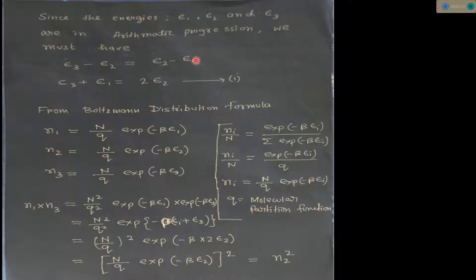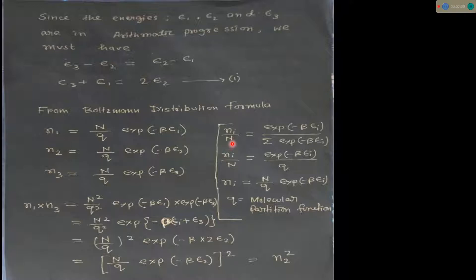From this equation we can write ε3 plus ε1 equal to 2ε2. This is equation 1. Now, the Boltzmann distribution formula: Ni divided by N, where N is the total number of molecules, equals exponential of minus beta times epsilon i, divided by the summation of exponential minus beta epsilon.